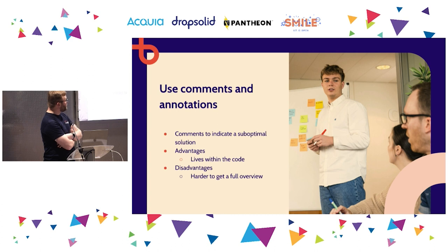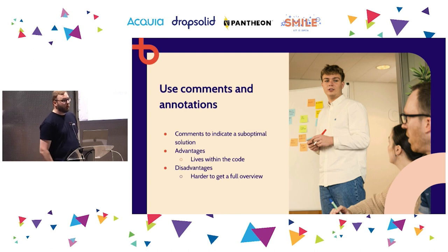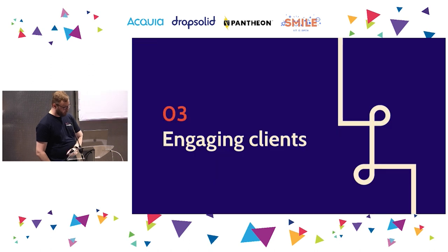The second approach is putting technical debt tracking inside your code using comments and annotations — this already happens in Drupal core, where things marked as deprecated are flagged. The deprecated things you're still using are technical debt you want to fix. Ideally use a combination of both: developers can see in the code when they're working with something deprecated or that should be refactored, and you also have a list in an issue tracker so you can visualize it for project managers and clients.